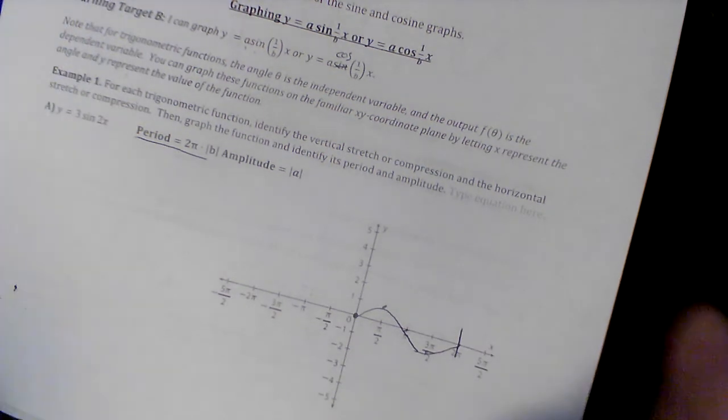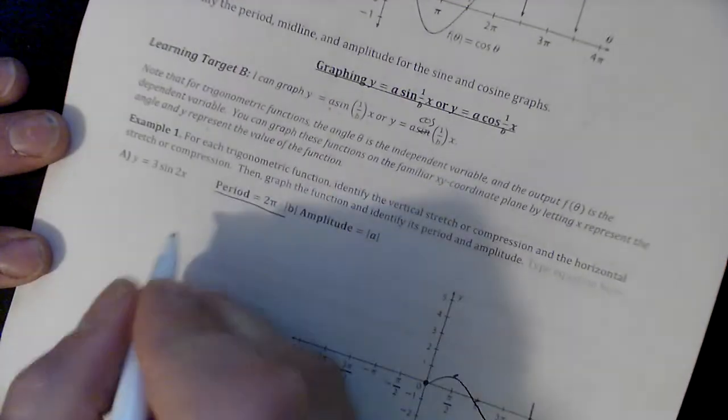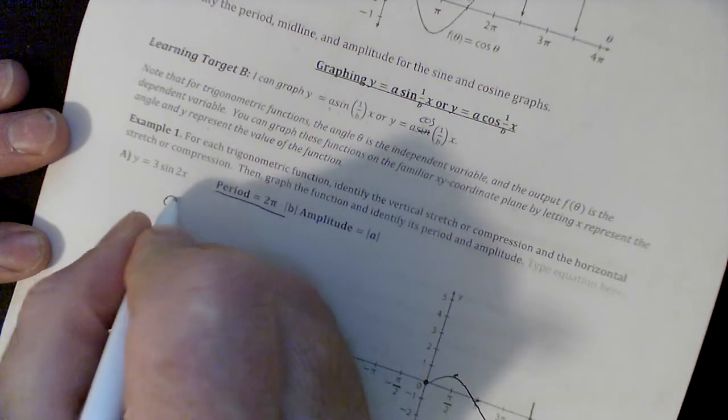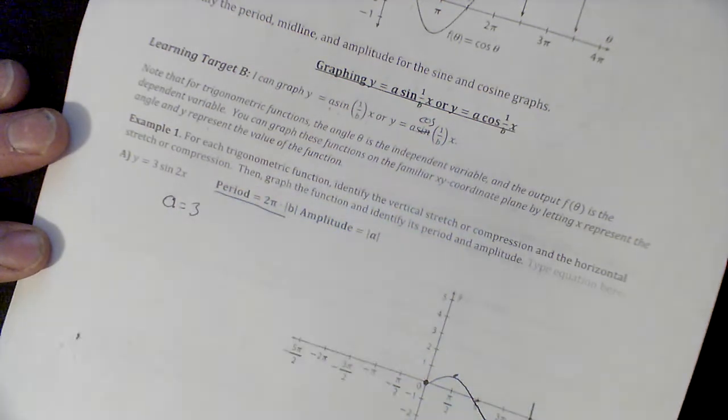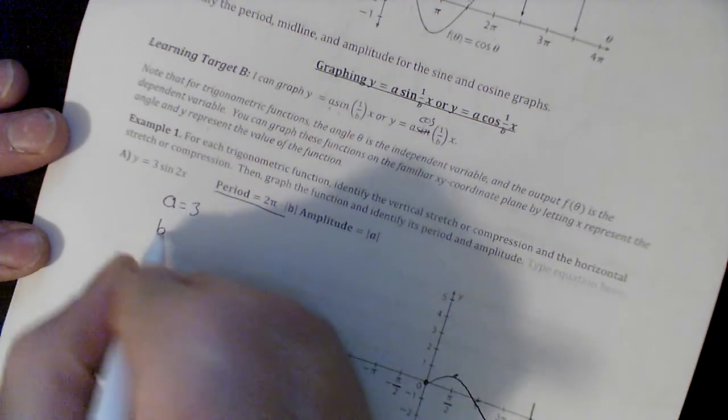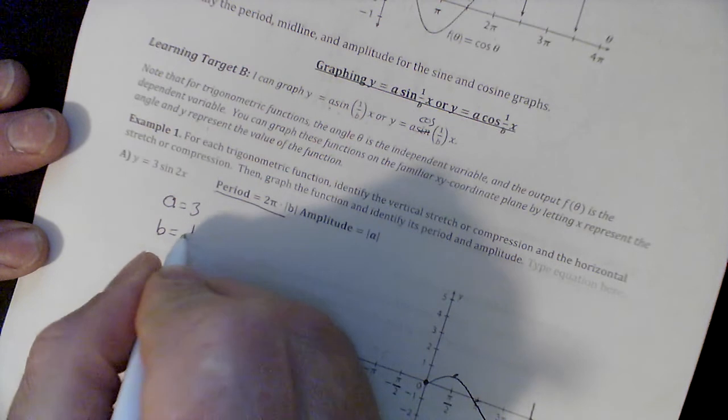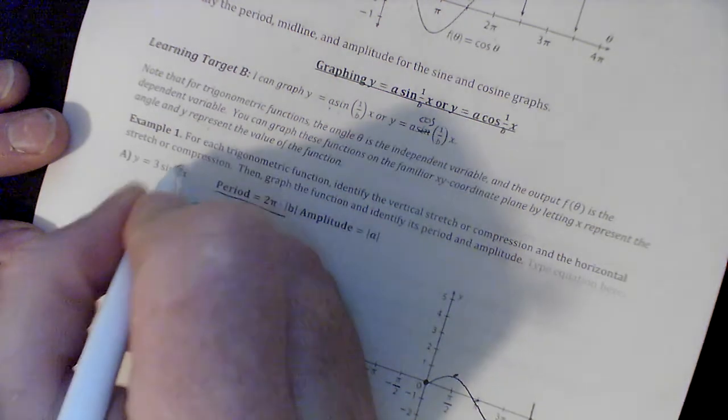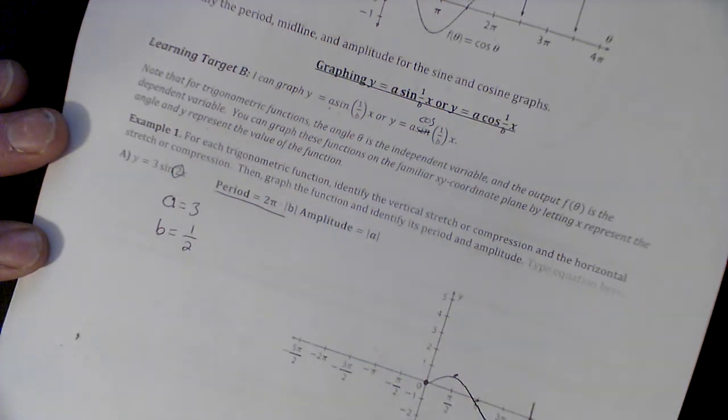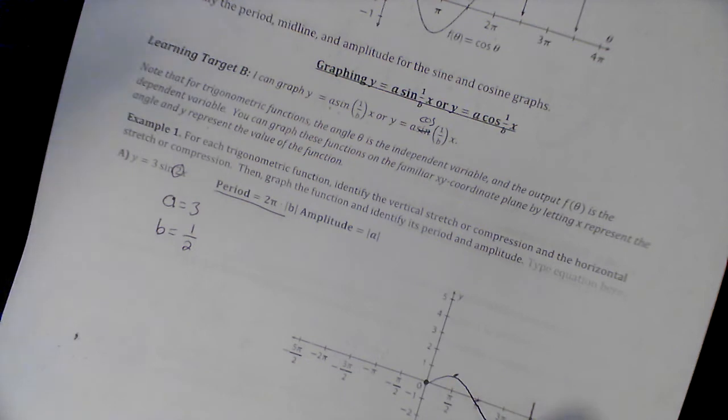Now what we're going to do is figure out our a. Our a over here is 3, and our b over here is - remember, it's always the reciprocal of what this is - 1/2. We're only going to graph one period, but I'm going to show you that we would continue.